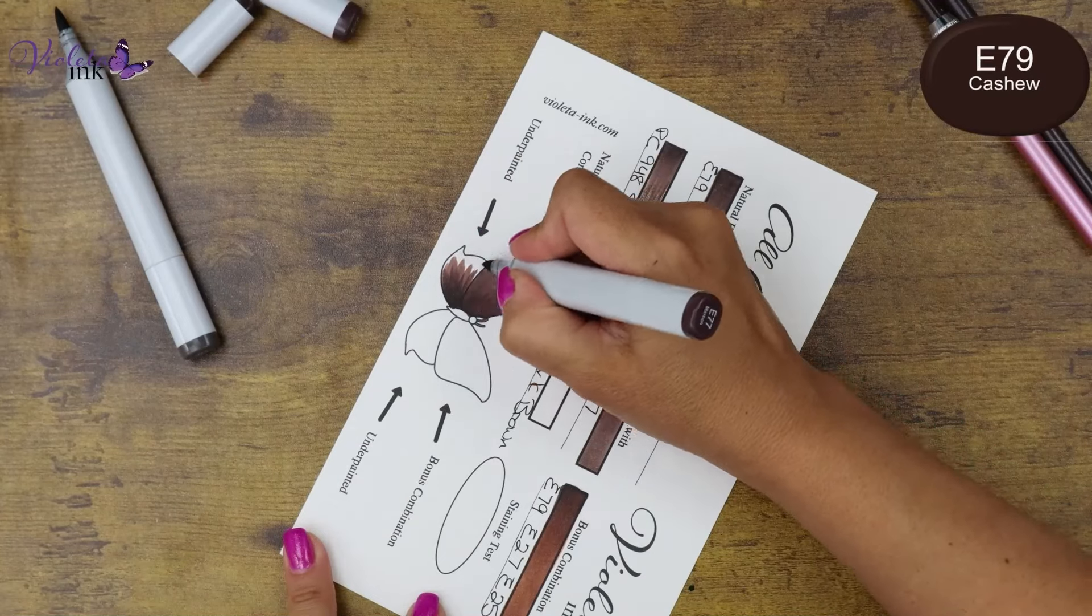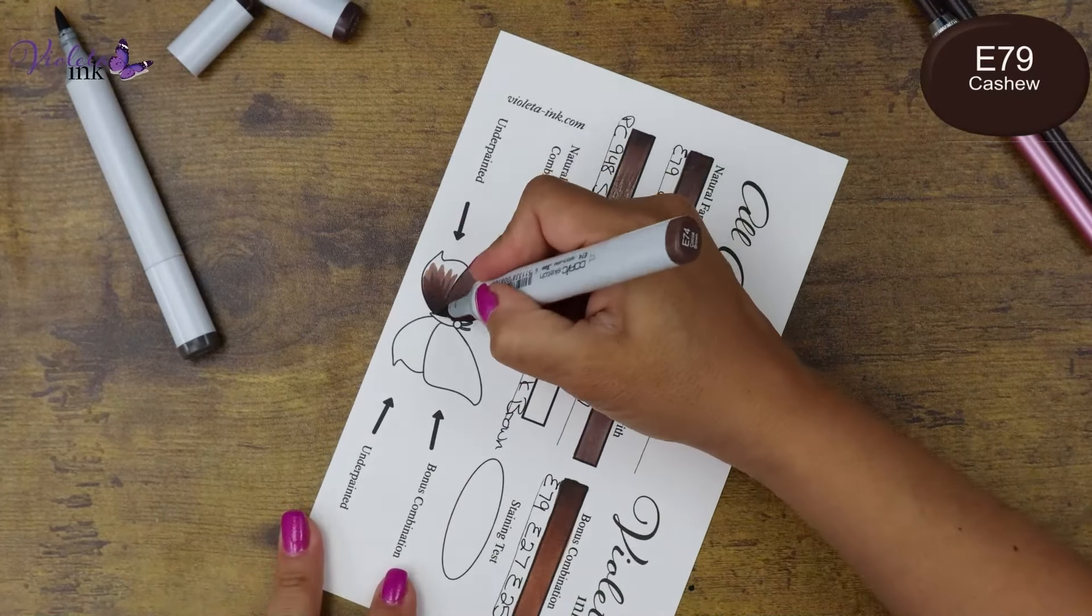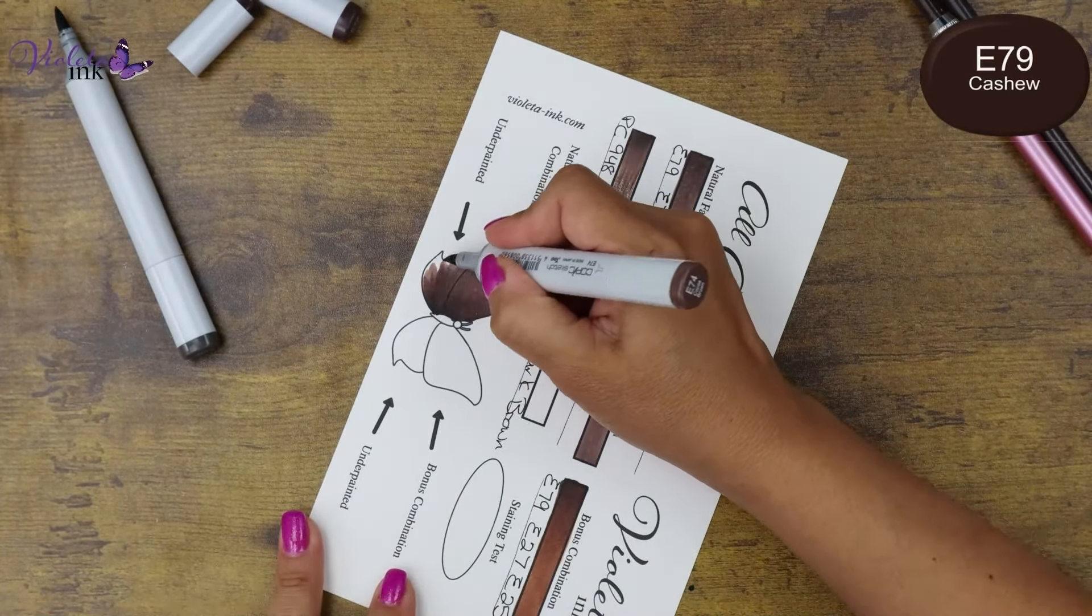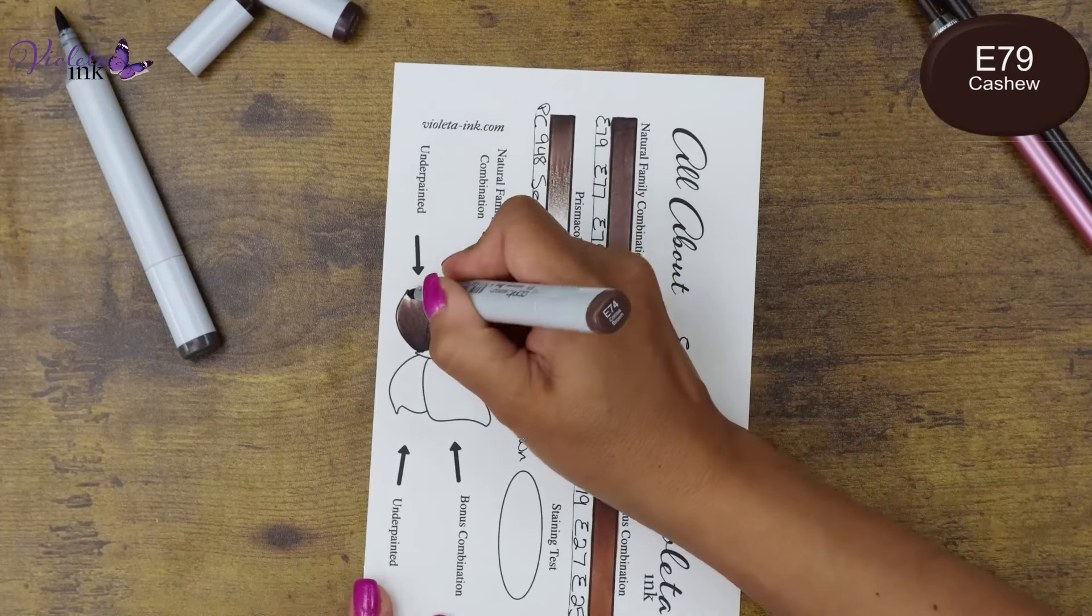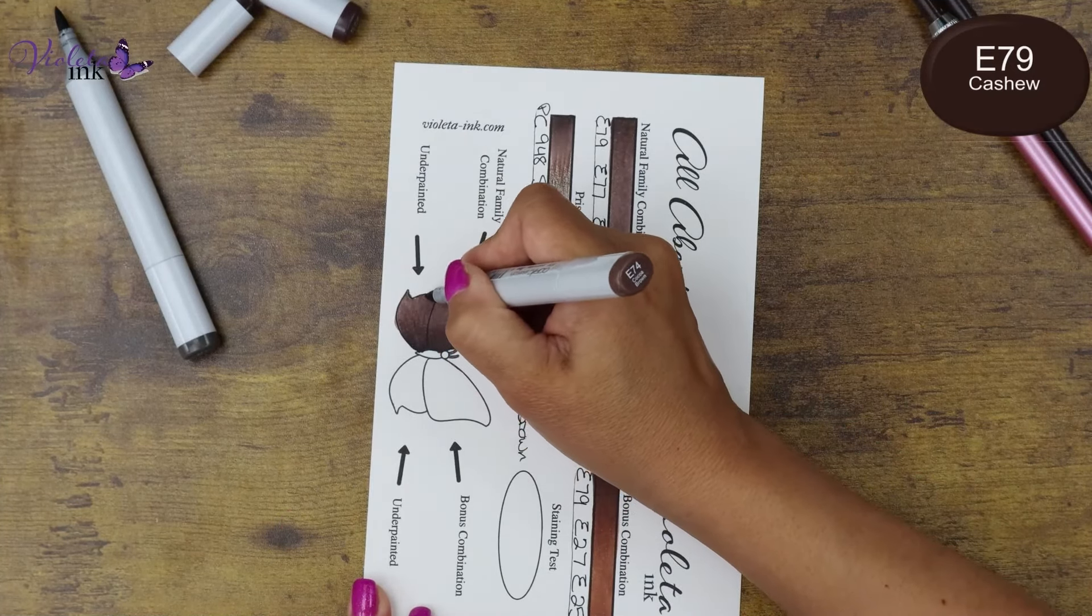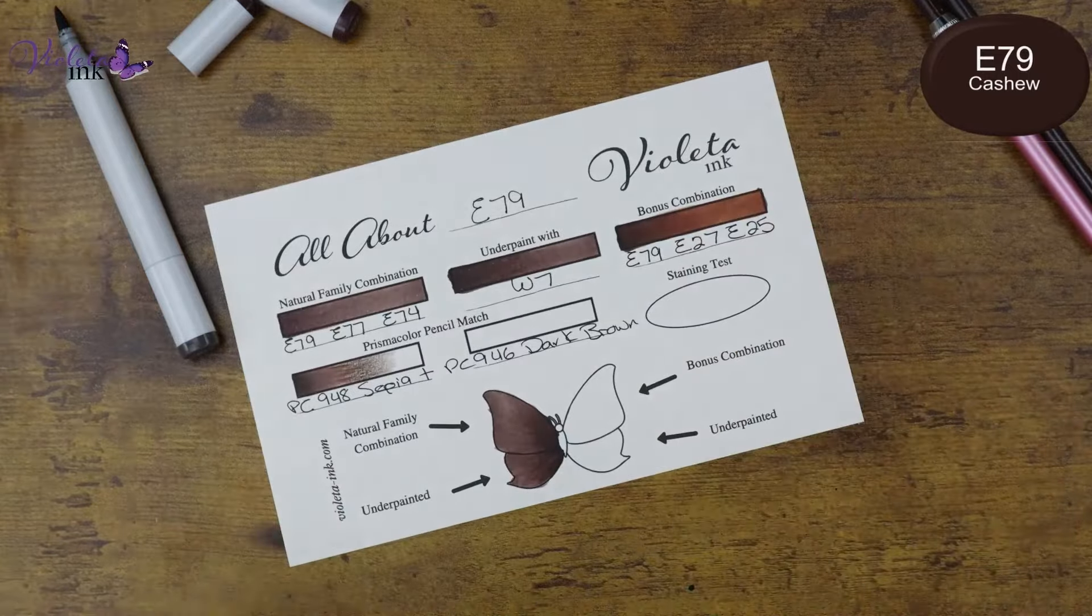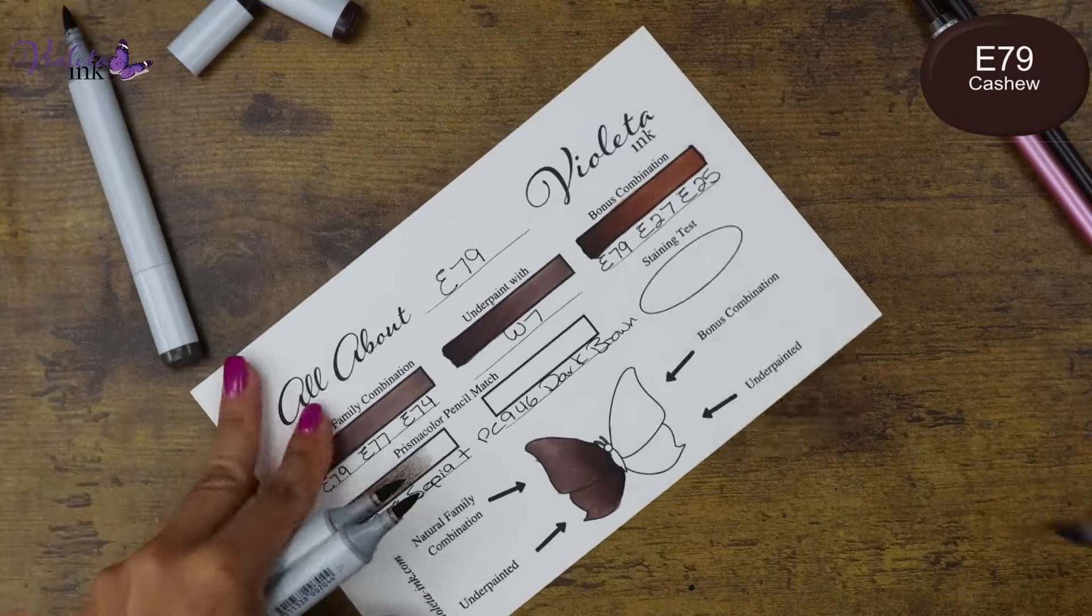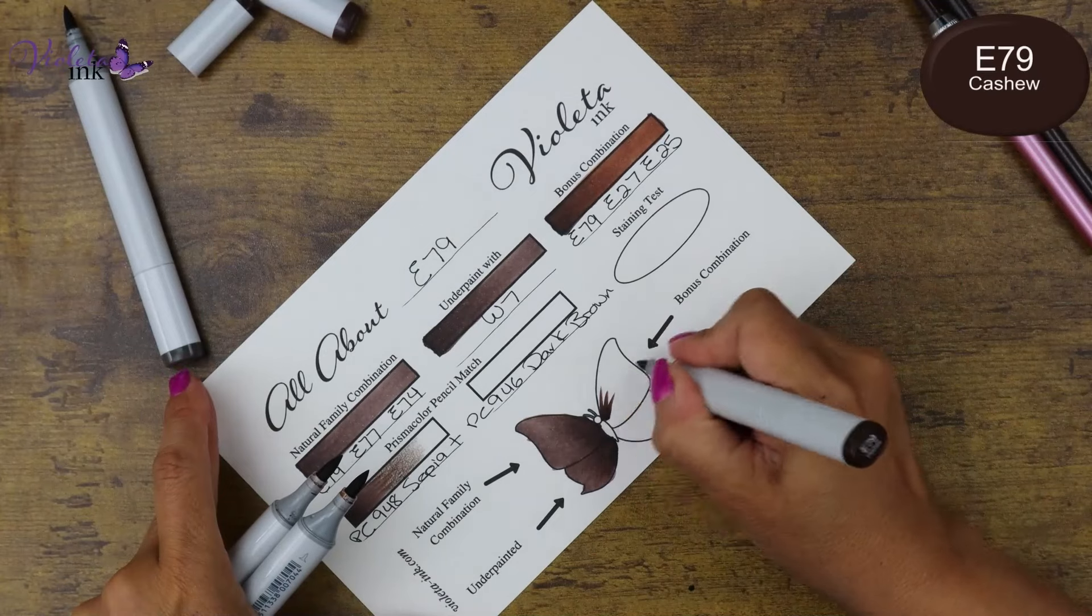That was underpainting. Remember on the butterfly the two wings on the top are going to be without underpainting. The ones on the bottom are going to be underpainted. The ones on the left are the natural family combination. The ones on the right are going to be the bonus combination.